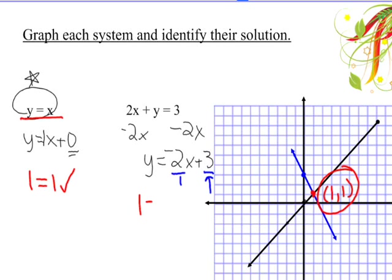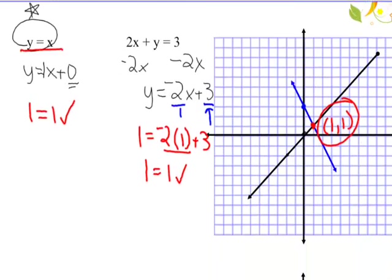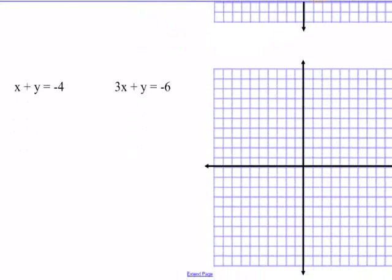Then I plug it in the next one. Y is 1. Negative 2 times x, which is 1, plus 3. Negative 2 plus 3 is also 1. It does work in both equations. You can always check your answers on systems by plugging back in. It should work in both equations. If it only works in one, something was wrong.